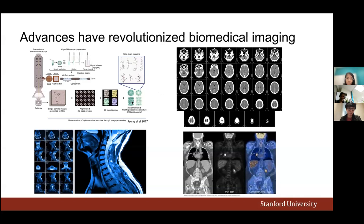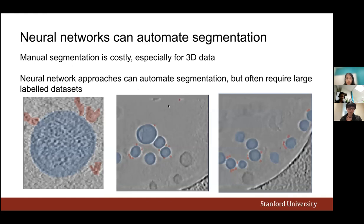Advances in biomedical imaging have revolutionized the amount of images we can capture. Here are a few examples: cryogenic electron microscopy, CT scan, MRI, and PET scan. Neural networks can automate segmentation of these objects, but it usually requires large labeled datasets, which can be quite costly to generate. I've done some by hand with collaborators on virus segmentation — it's quite time intensive to label all the pixels and figure out which pixels are positive and negative examples.